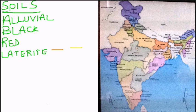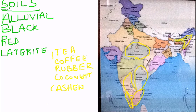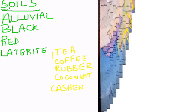potash, and magnesium. The soil spreads to around 2.4 lakh square kilometers. The areas include parts of Assam, Karnataka, Andhra Pradesh, Tamil Nadu, Kerala, and Madhya Pradesh. The crops grown in this area are tea, coffee, rubber, coconut, and cashew.